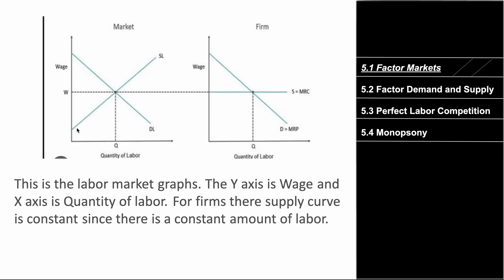So for a market, it's just basic supply and demand. But for firms, demand equals marginal revenue product — which we'll cover later — and supply is marginal revenue cost, and supply is constant. That's because for a firm in a specific industry, there is a constant amount of workers that you can possibly employ. So make sure you remember: for firms, supply is constant.